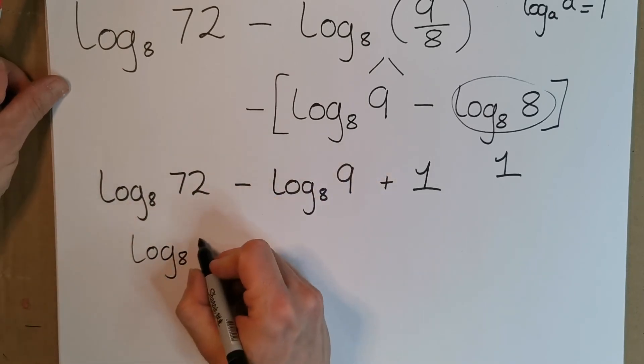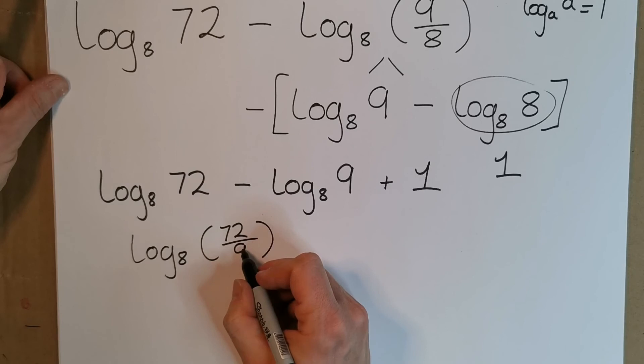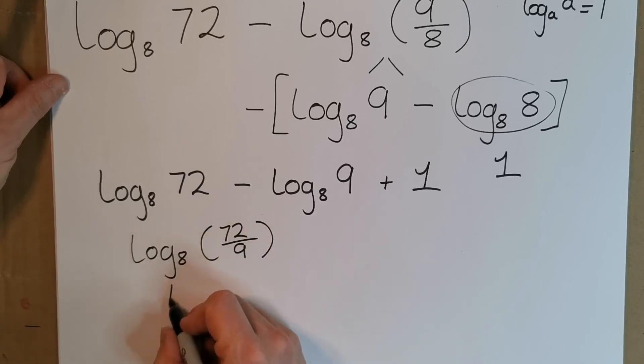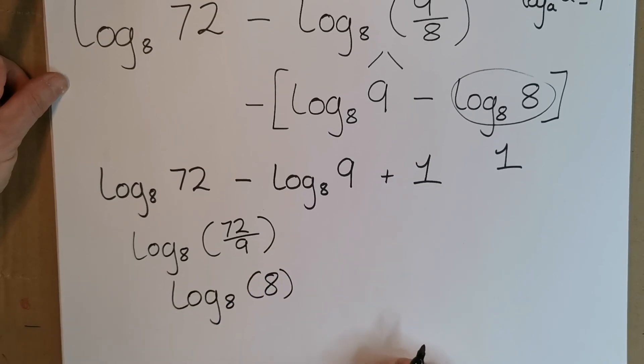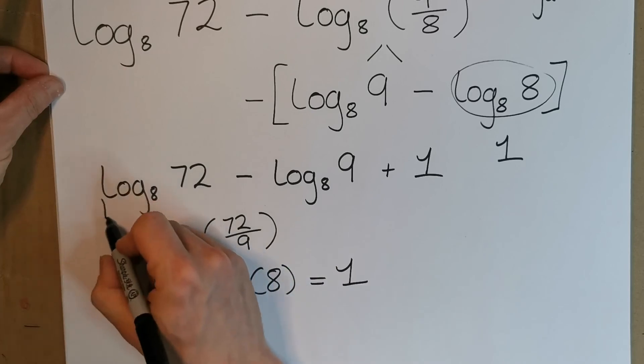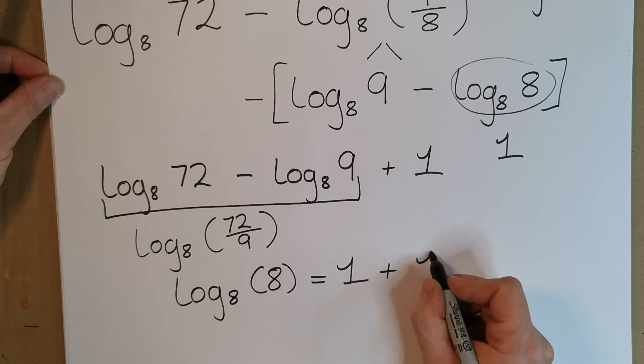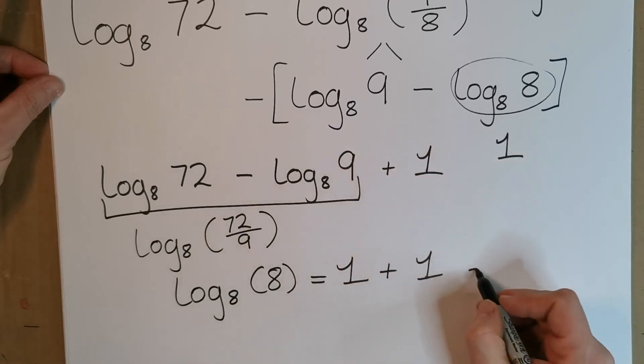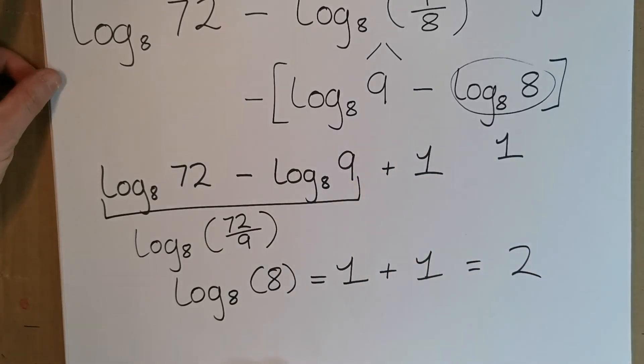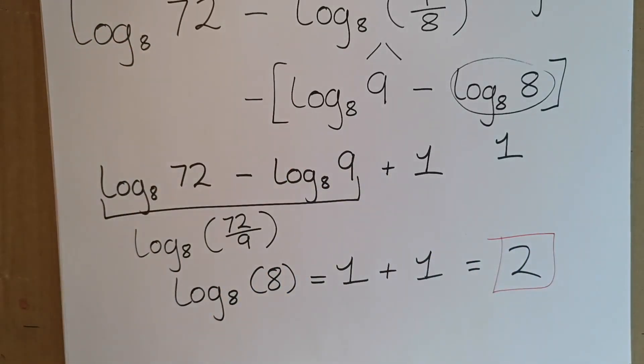Log base 8, this goes on top, this goes on the bottom, so I'm left with 72 over 9. 9 goes into 72 eight times, so this is log base 8 of 8, which again is 1. So this turns out to be 1, and we have this plus 1 here, so we end up with 1 plus 1 which equals 2. A pretty complicated looking problem ends up just being the number 2.